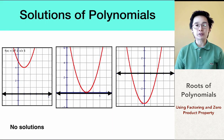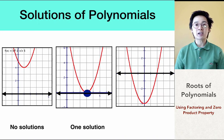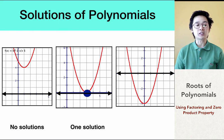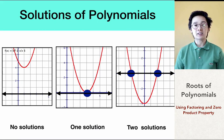For graph number two, the middle graph, we have one point of intersection of the parabola along the x-axis — the vertex is touching the x-axis once. So we can have one solution for this polynomial. For the third example, the graph has two points of intersection along the x-axis, which means we have two solutions.